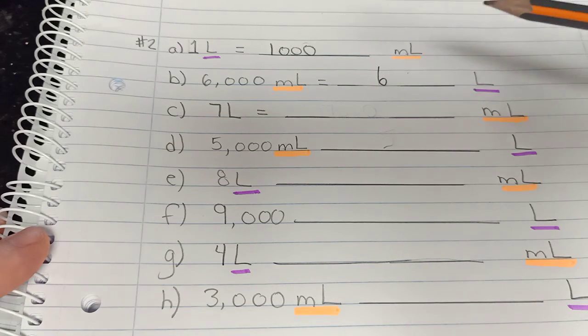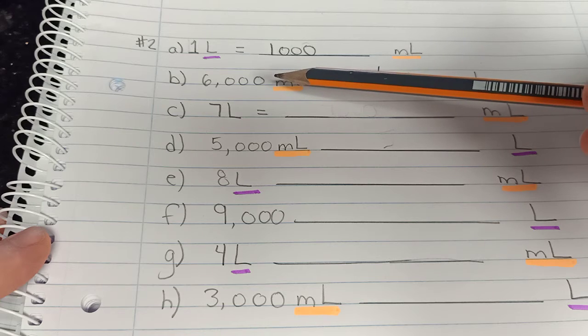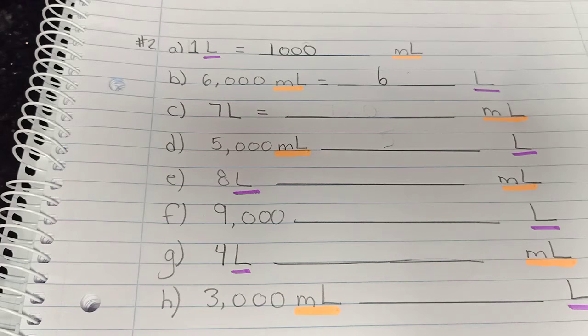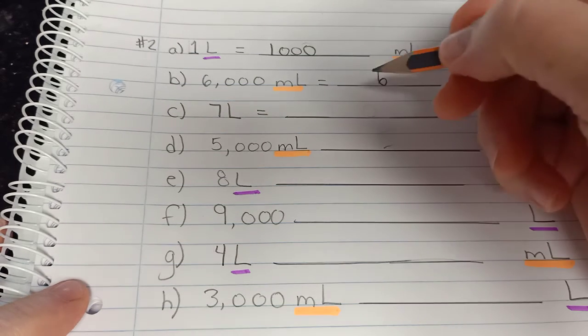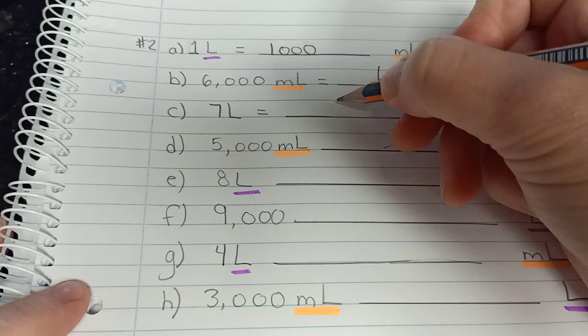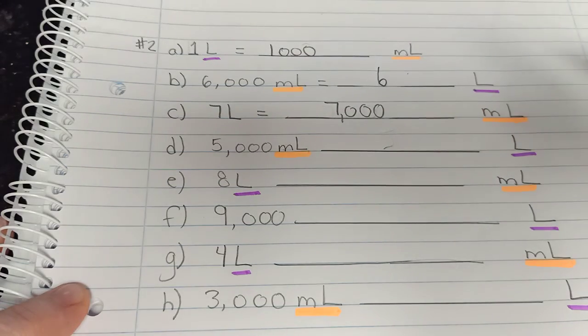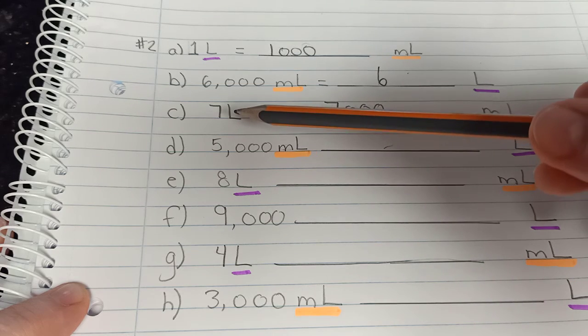So if I know that 6,000 milliliters is the same as six liters, I can use that information to figure out how much seven liters is. I know that it's 1,000 milliliters more and that gives me 7,000 milliliters there, which is the same as seven liters.